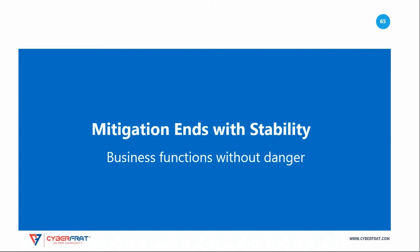At the end of the containment process, the organization should be in a semi-stable state. Responders should be confident that the incident is over and there is no immediate danger to the organization. Business operations should be functioning, at least on a limited basis, although they may use temporary workarounds. Everything is generally okay and the organization is ready to move on to the next steps: recovery and reconstitution.